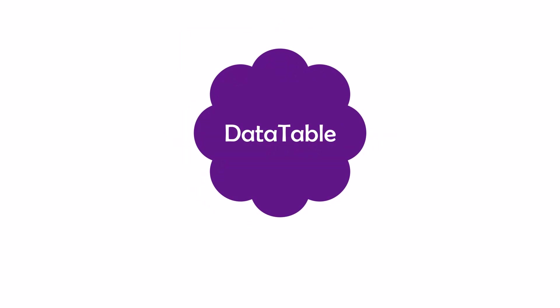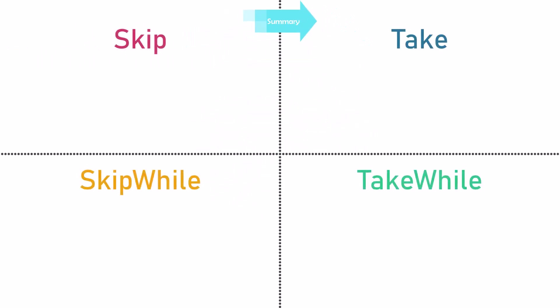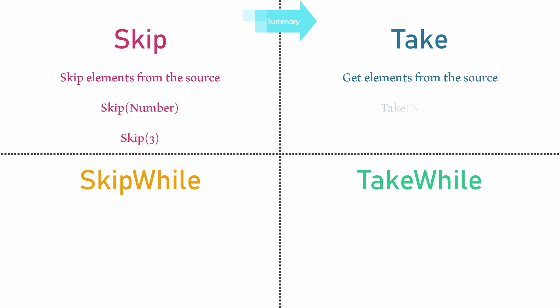That's all about this function. Before I end this video, let me summarize this function and also the last 3 functions I showed you in the previous videos. The Skip function skips elements from the source — we set the number of elements we want to skip, for example Skip 3 to skip the first 3 elements. Take is to get elements from the source — we set the number we want to get, for example Take 3. As you see, we don't have any conditions here, we only set a number.